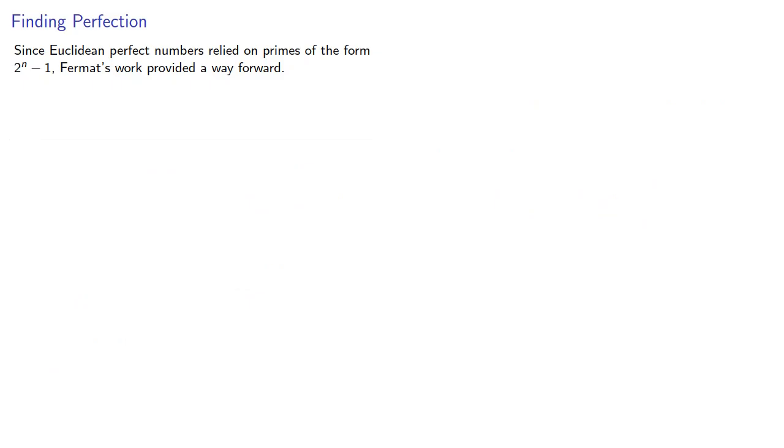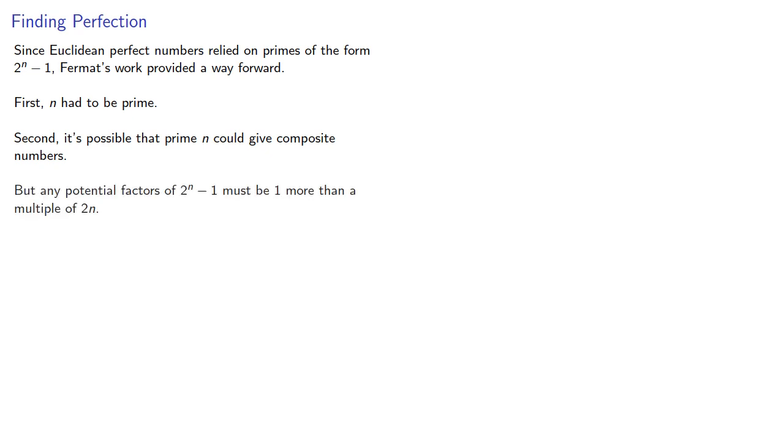Since Euclidean perfect numbers relied on primes of the form 2^n - 1, Fermat's work provided a way forward. First, n had to be prime. Second, it's possible that prime n could give composite numbers, but any potential factor of 2^n - 1 must be one more than a multiple of 2n. This allows us to quickly determine whether 2^n - 1 is prime.